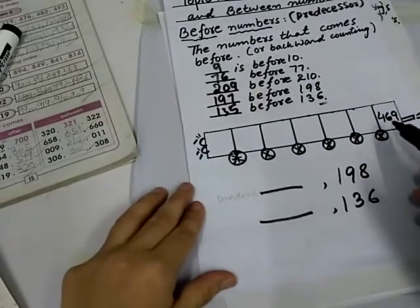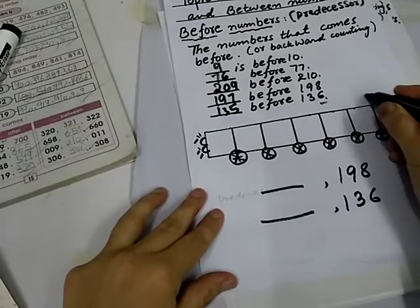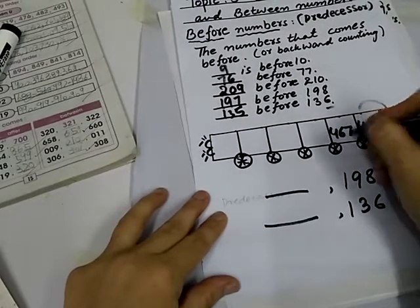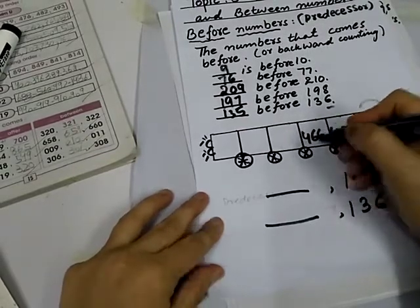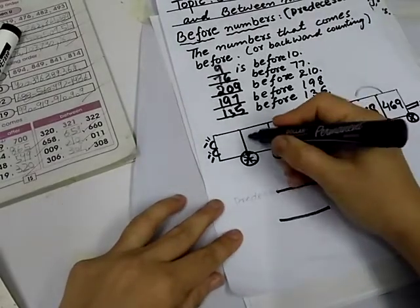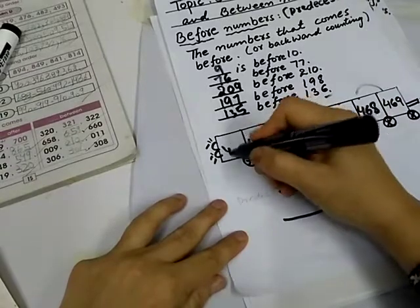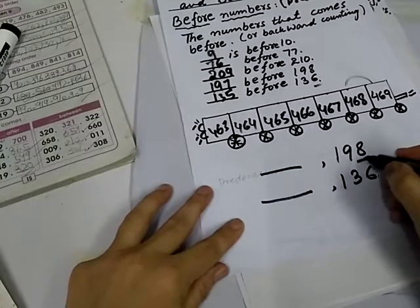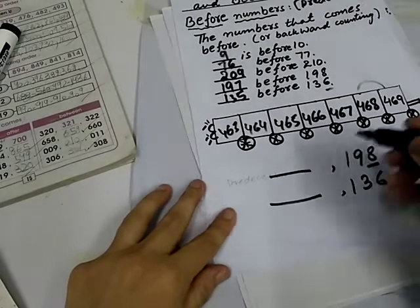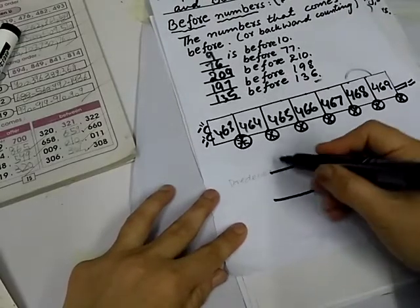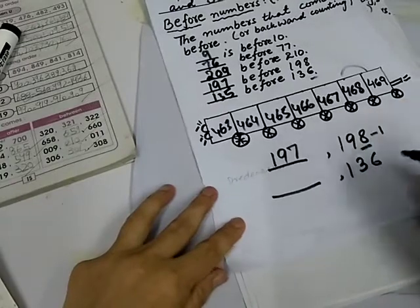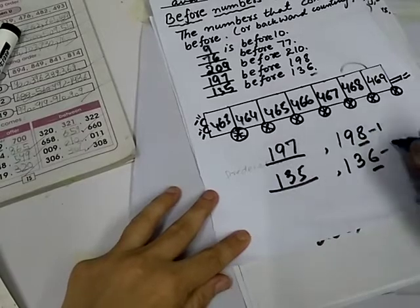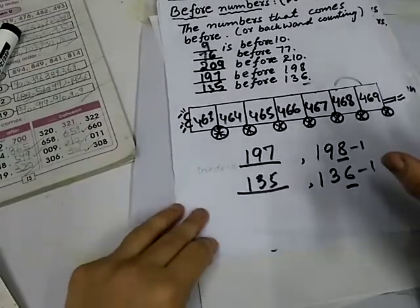Now, complete this backward counting. 469 before? 468, 467, 466, 465, 464, 463. Now, 198 before? 198 before? Check the first number. Unit number 8. Now, the number is minus 1. 197. Now, first number check 6. 135. Before means predecessor minus 1.